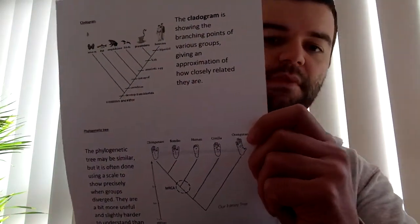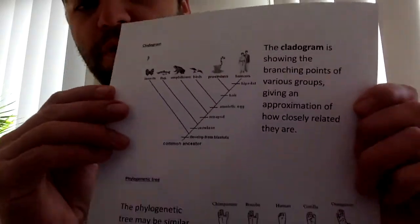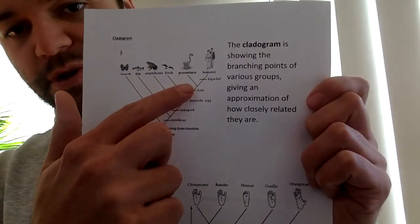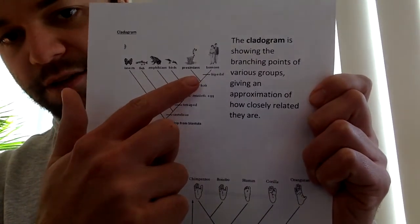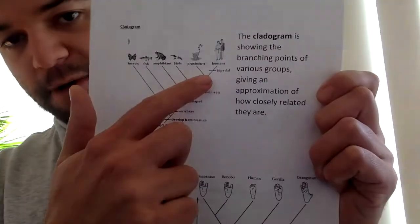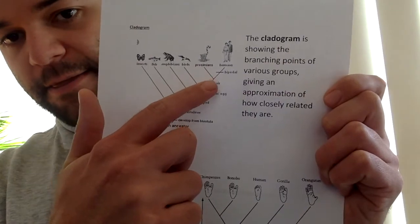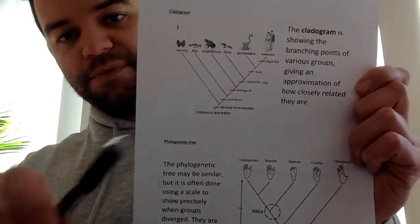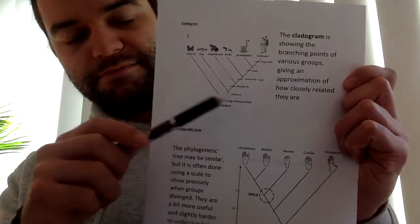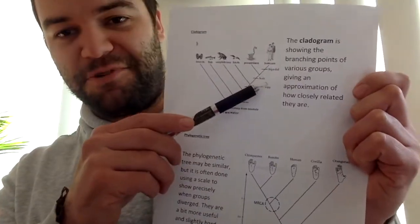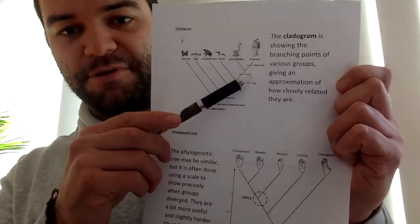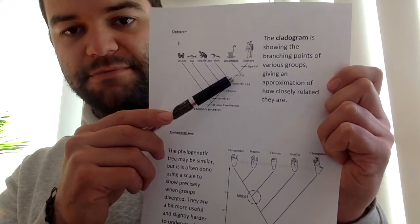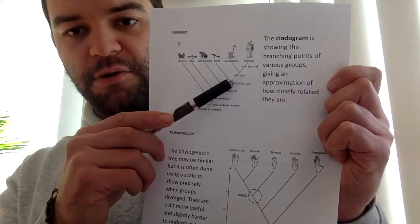Looking up closer to the top, we've got the branching point between prosimians — the group of primates that includes lemurs and things like that — and then the group that eventually goes on to form humans. On a cladogram, you want to look for where the branching point is. The more recent the branching point, the more closely related the species are. These points where the branches are is what you're looking out for.